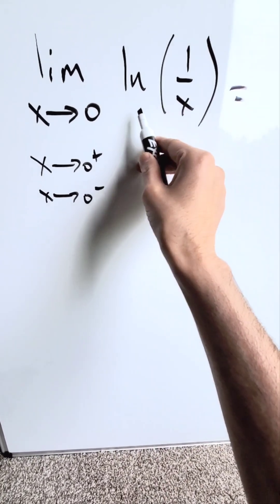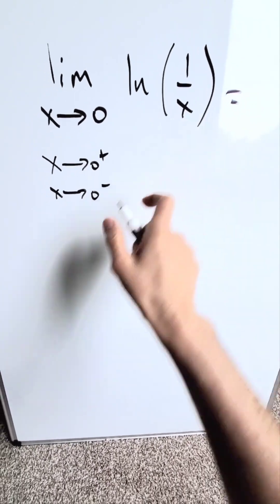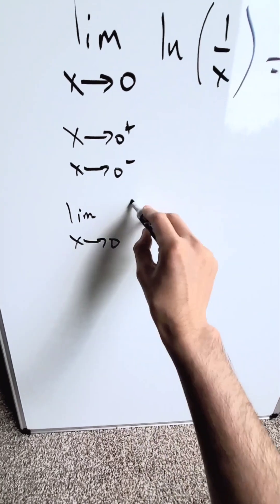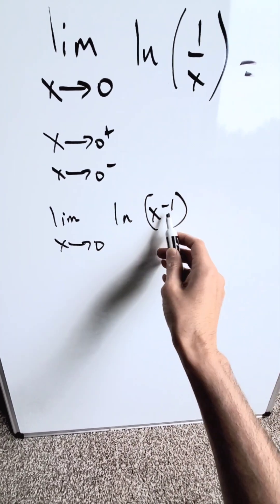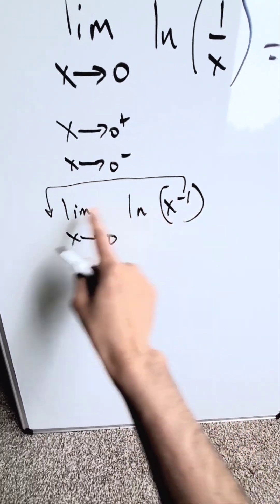How can we approach this? If you don't know how to graph this, we can modify the function. We're looking at limit as x approaches 0 of natural log of x to the power of minus 1. Then you can use properties of logs and limits to transport that minus outside.